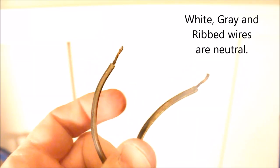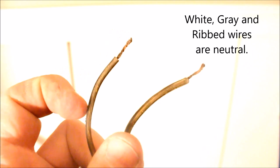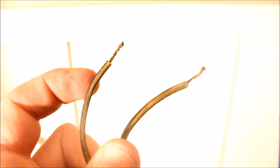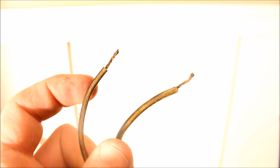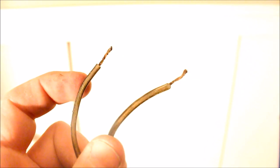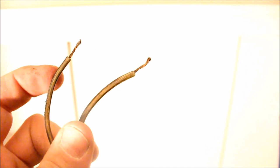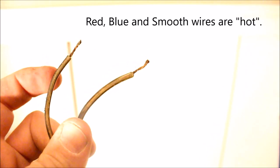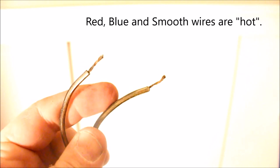White or your neutral wire. This smooth one here, there's no rib on it and it's going to be hot. Sometimes you might just not have like a black wire. There could be like a red or a blue wire. Those are also going to be hot. And a gray wire would be neutral. Gray and white are neutral.